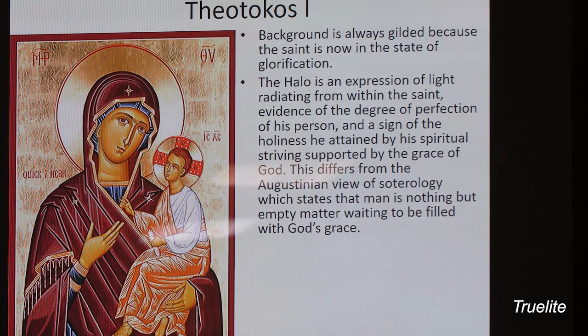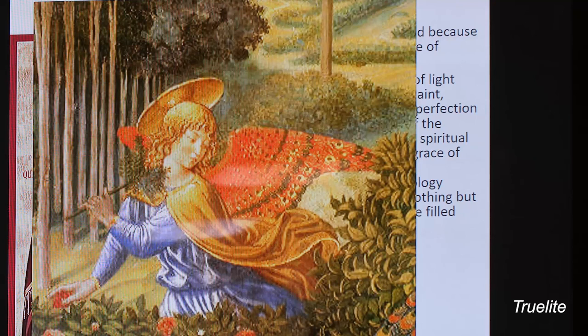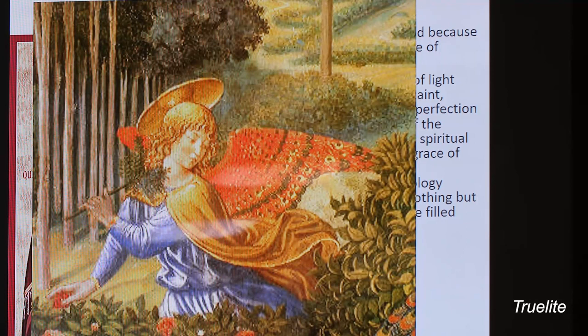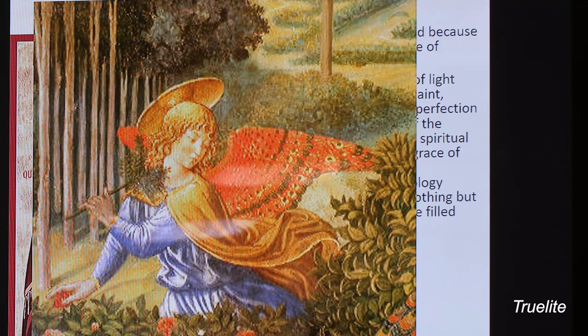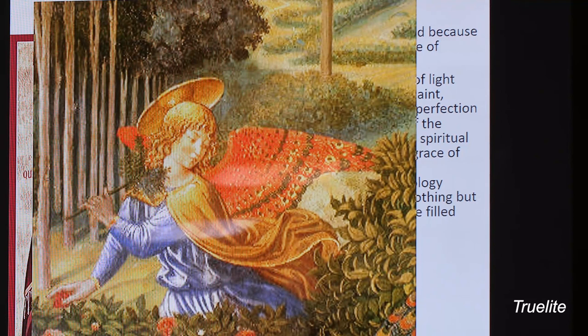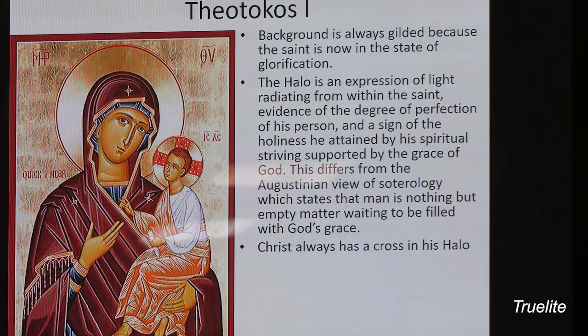This contrasts with the Augustinian view, which says that men are nothing and God's grace is everything. Some halos look like a dish that came down from heaven, representing the theology of John Calvin that man is nothing and God's grace is everything — the idea of predestination. Whereas the icon says that man and God unite, and the saint himself emits holiness — even after the saint passes, his relics emit holiness. There's a transformation.